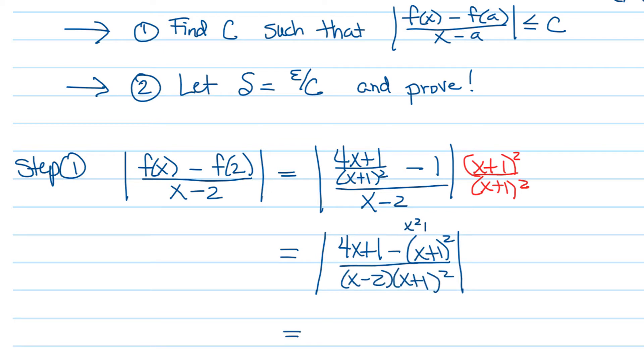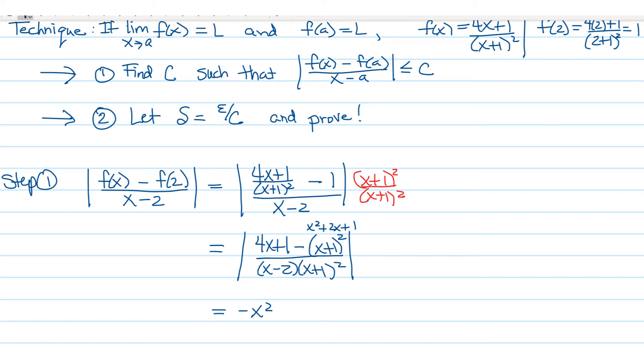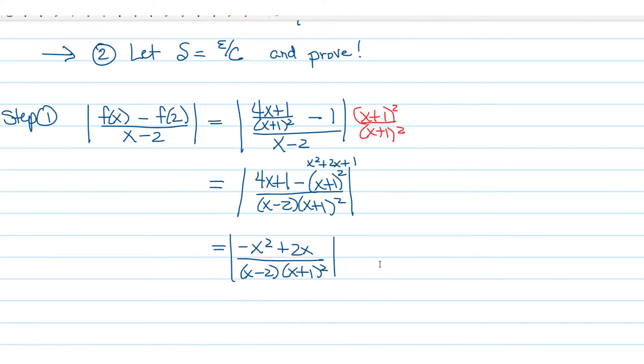(x+1)² is x²+2x+1, but we're subtracting. So we have -x² and 4x-2x is +2x, and +1-1 cancels. I'm going to leave the denominator in factored form, which is preferable anyway.